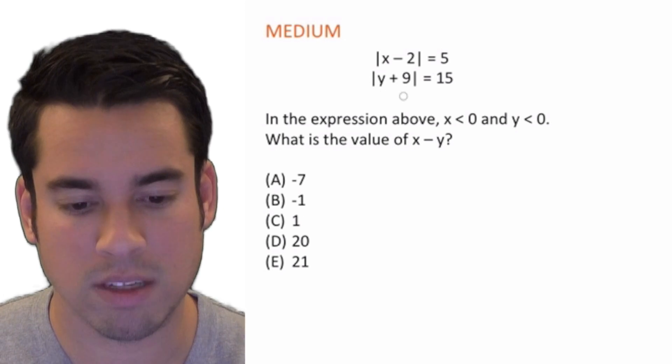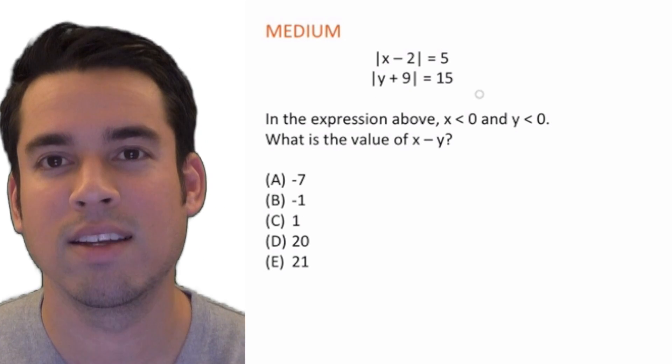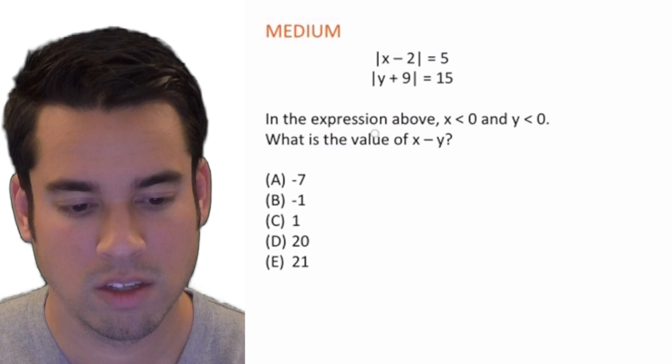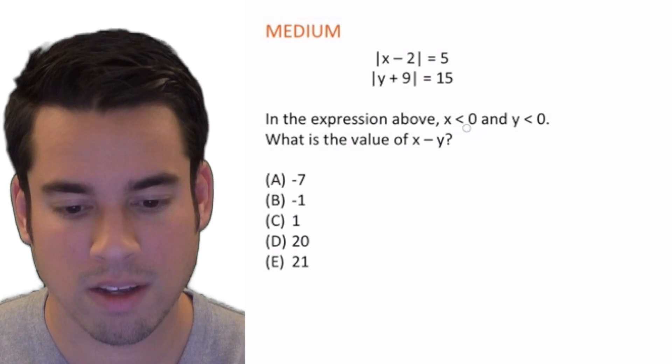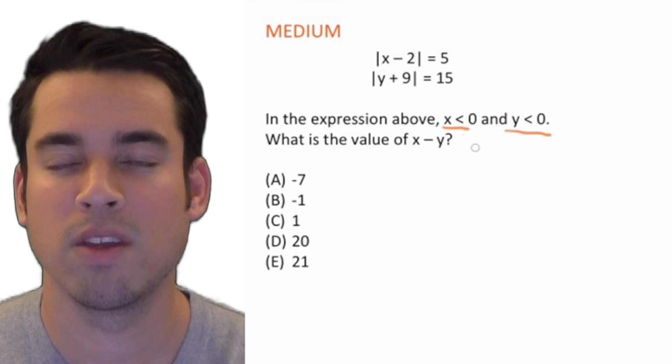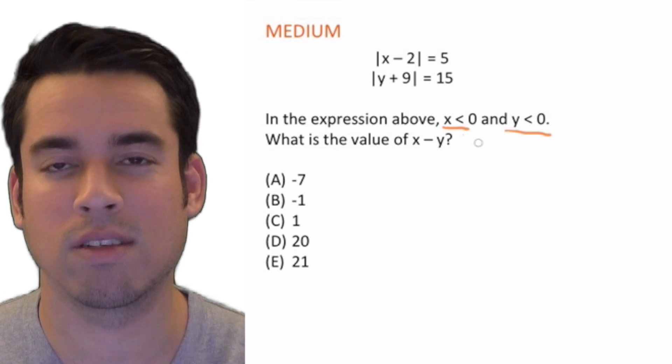So it says in the expression above, x < 0 and y < 0, so we know that both of these variables are going to have negative values. Then it says what is the value of x - y?